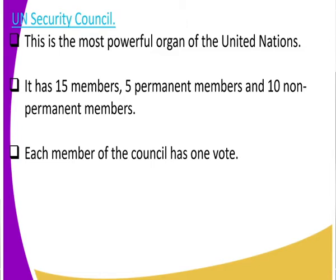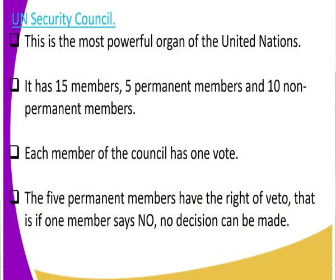Each member of the council has one vote. If you are from Kenya, you vote as one vote. If you are from Britain, you vote as one vote — regardless of the number of people, each member has one vote. We also get to realize that the five permanent members have the right of veto.